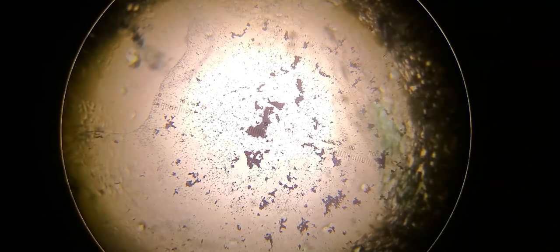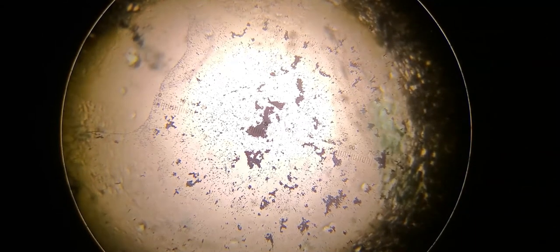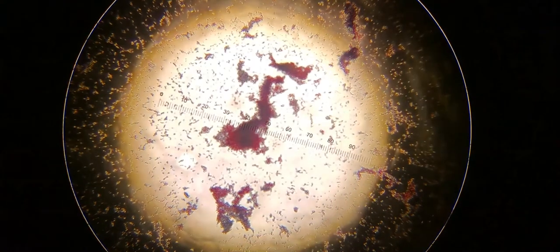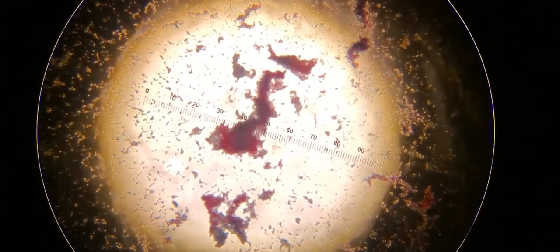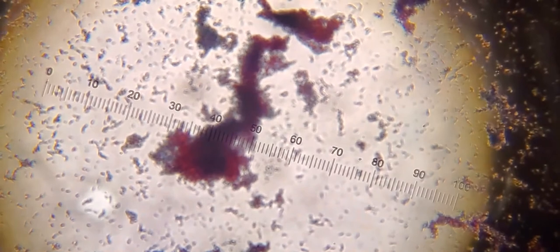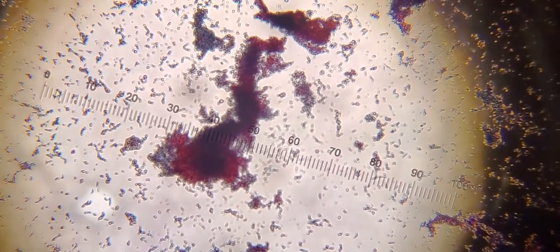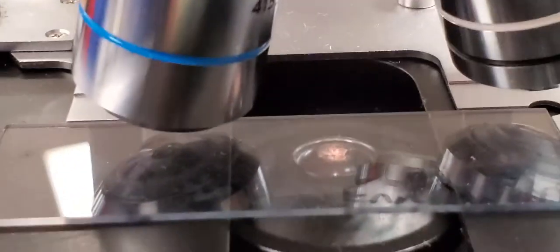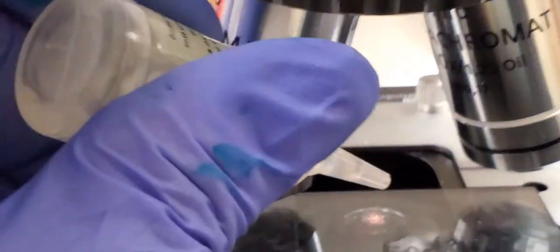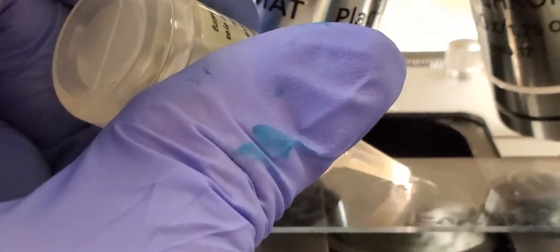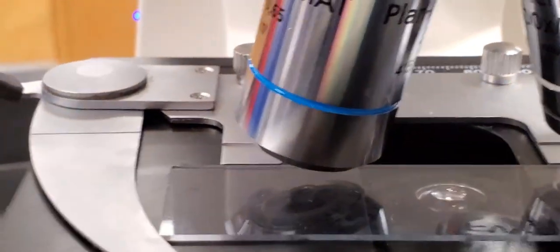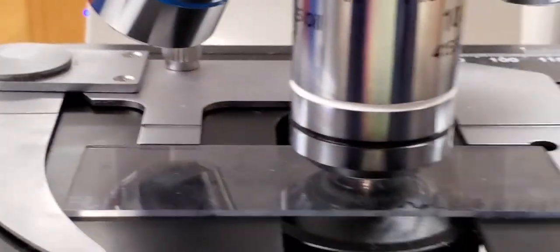There's our field of view when we're looking at the endospore stain with the 40x total magnification, and here with 100x total magnification. Since we're looking at our bacteria cells we're going to add our drop of immersion oil by straddling the stage with your objectives and just put your drop of immersion oil right over the center one. Swing that objective so that it is touching the oil.